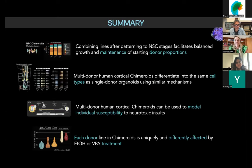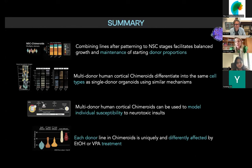So to wrap up: if we are interested in growing together different donors to understand how they react to different perturbations, a good way to go is to use neural stem cells to maintain your donor population rather than pluripotent stem cells. These multi-donor chimeroids are extremely similar — if not identical — to our current organoid model, and they have high reliability and fidelity to fetal endogenous tissue. We can use this model for assessing individual susceptibility to neurotoxic insults, and I showed you how we can detect and stratify our donors depending on how they are affected by treatment.